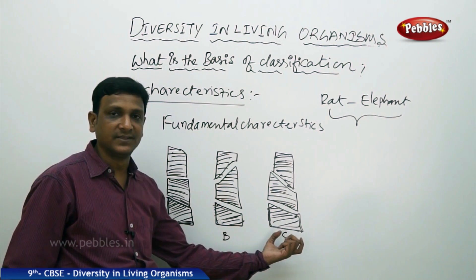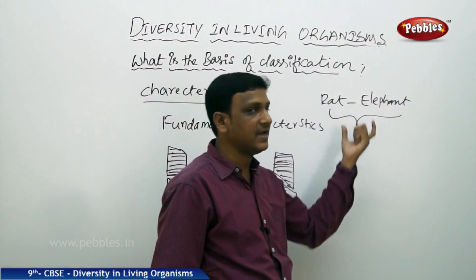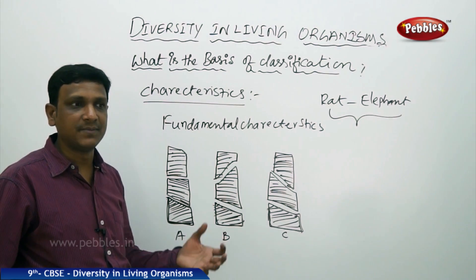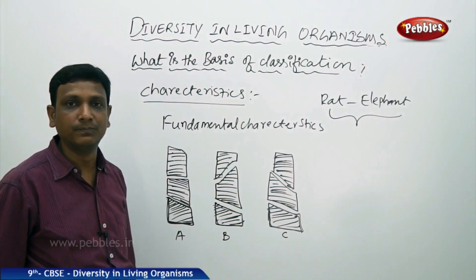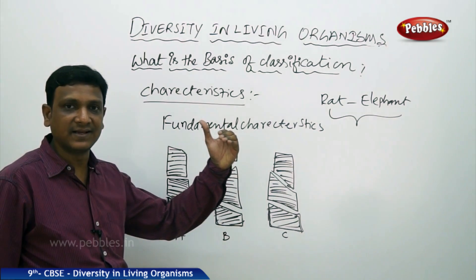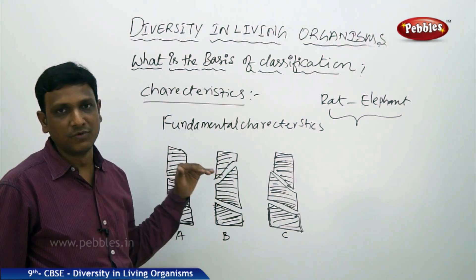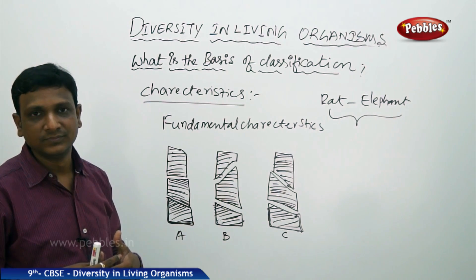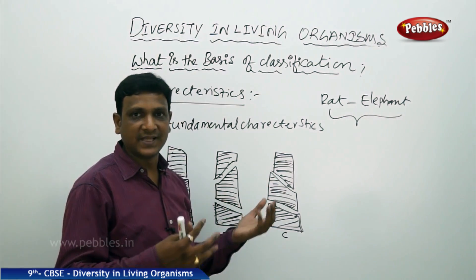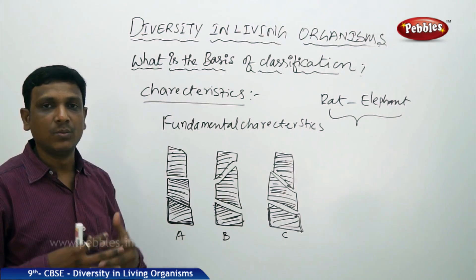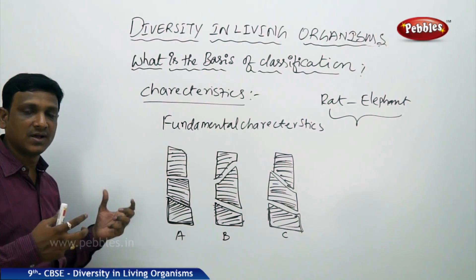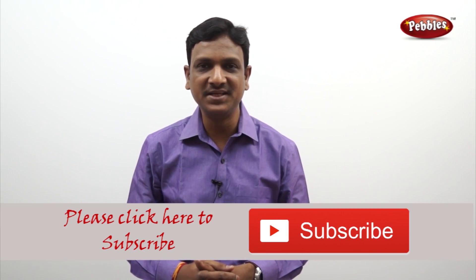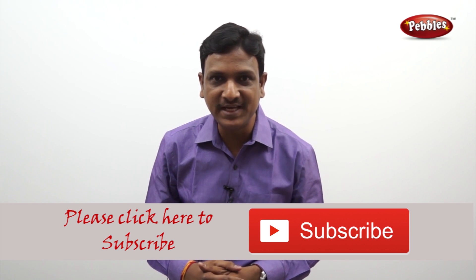You have to observe the fundamental characteristics. Now you can place rat and elephant in the same group. Initially you observed only size difference and wondered how these two belong to the same group, but when you see the many other important fundamental characteristics, there are more similarities, so they are grouped together. Rats, dogs, cats, and we humans are all part of the mammal group — because we are warm-blooded, give birth to young ones, have hair on our body, and young ones are fed with milk by the mother.